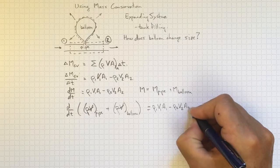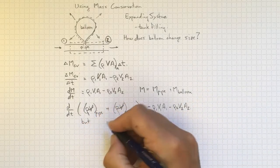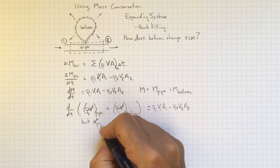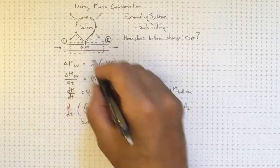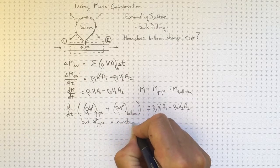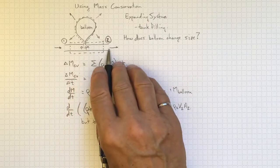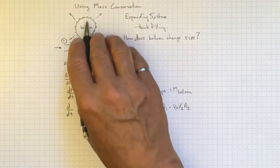So we haven't assumed constant density yet, but the volume in the pipe, assuming this is a rigid pipe or close to a rigid pipe, is a constant. So all of the difference between the inflow and the outflow shows up as a change in the volume of balloon.